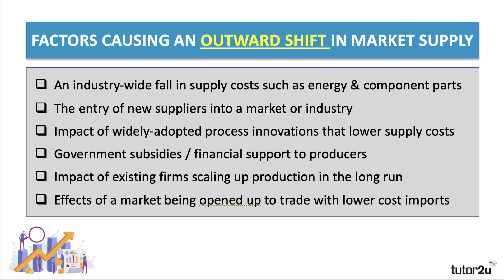Second, the entry of new suppliers into a market or industry can increase market supply. When barriers to entry fall and new producers enter, market supply increases at each price. Third, widely adopted process innovations that lower supply costs — process innovation is best described as making more with the same inputs, or making the same output with fewer inputs. Innovation in how goods and services are produced can bring down supply costs and therefore increase market supply.